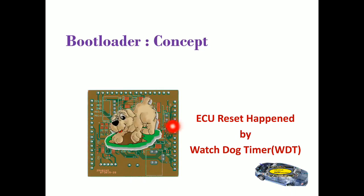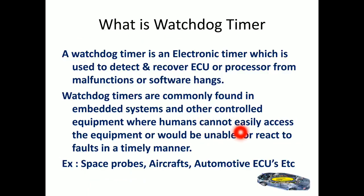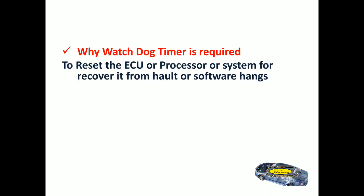Why is the watchdog timer needed? If the ECU is accessible by a human, we can directly press reset and it will happen. But in cases where a human cannot access the particular ECU, we need the watchdog timer — so no human interface is required. Examples include space probes, aircraft, and automotive ECUs — places where humans cannot easily access the equipment, and the watchdog timer will automatically reset the ECU or processor.